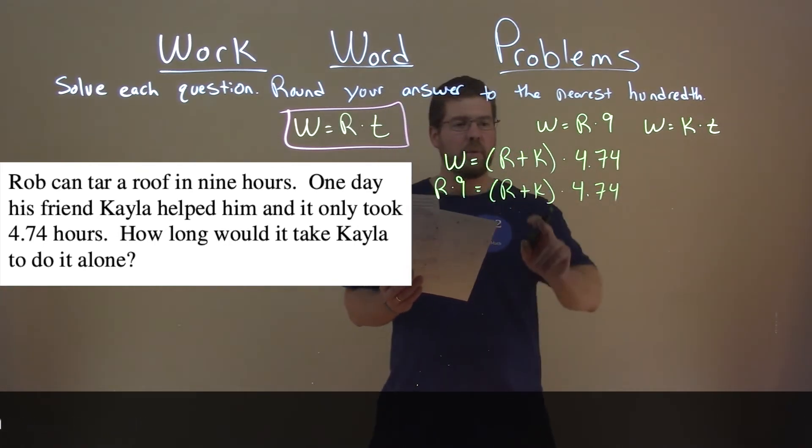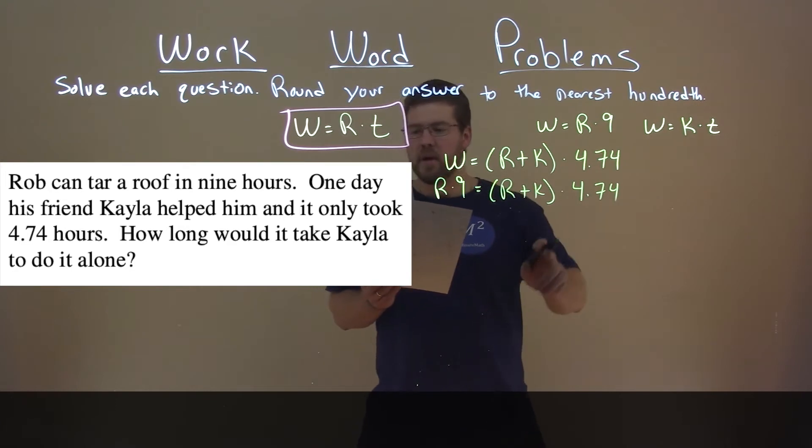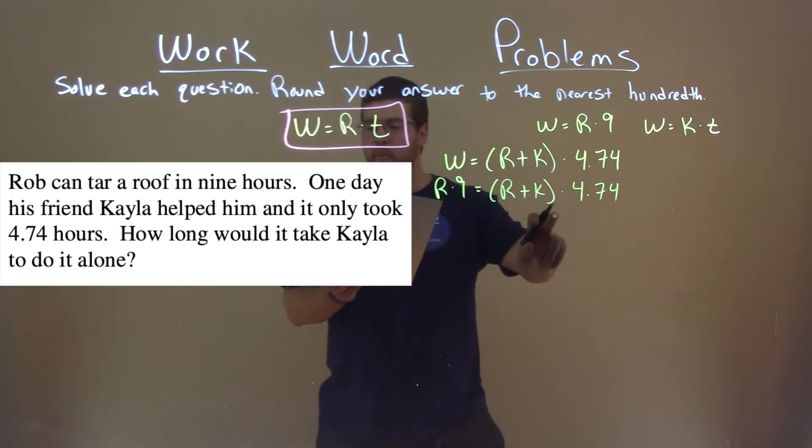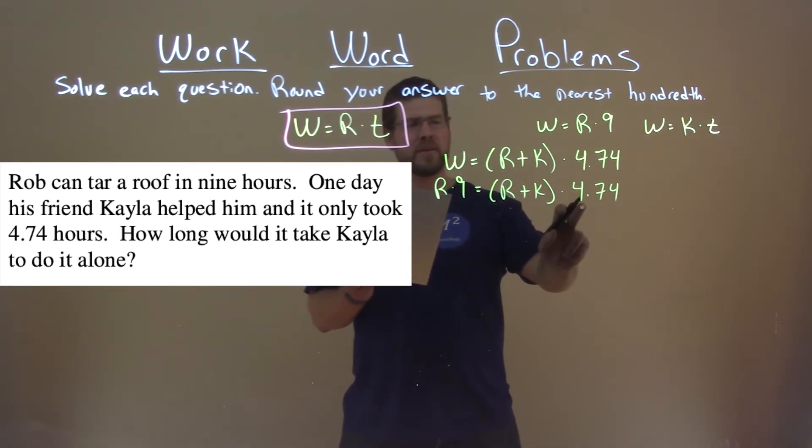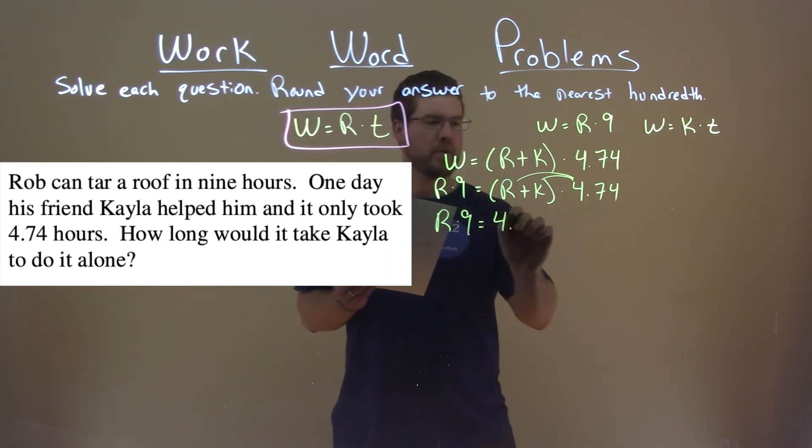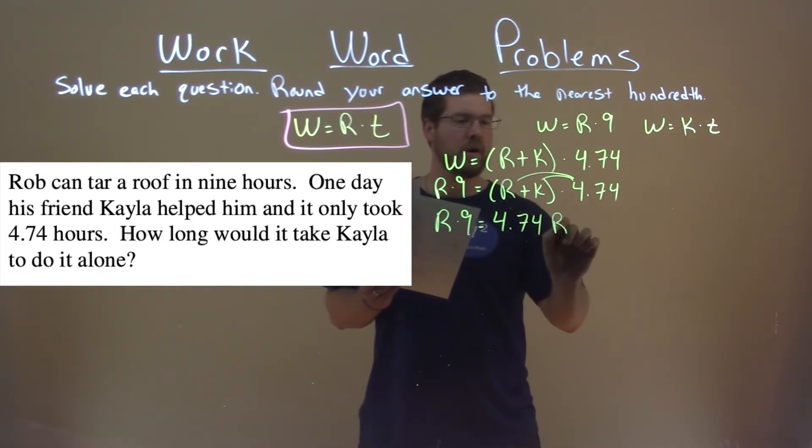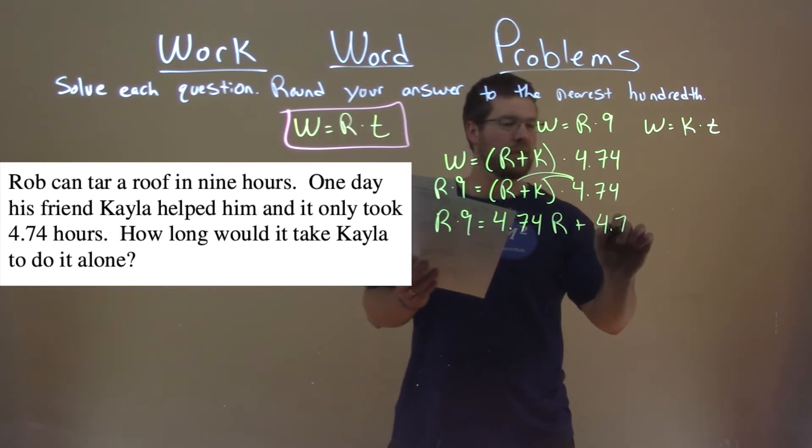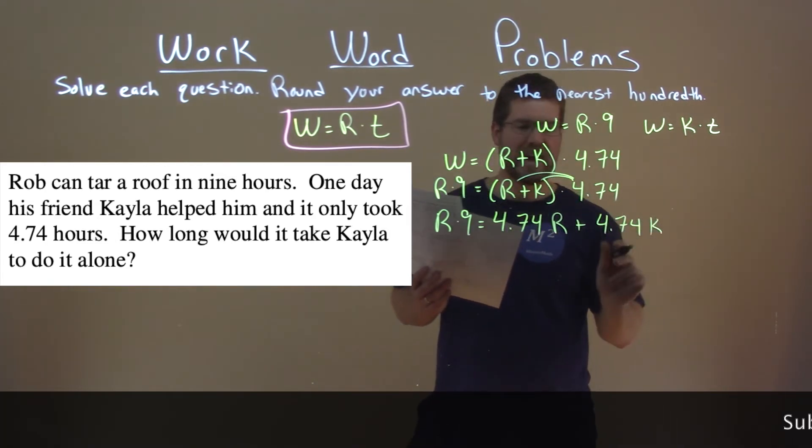Now what we want to do is distribute this 4.74 to both sides here, and we have r times nine equals 4.74r plus 4.74k.